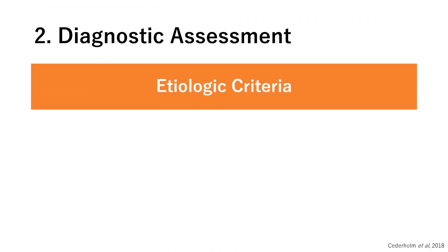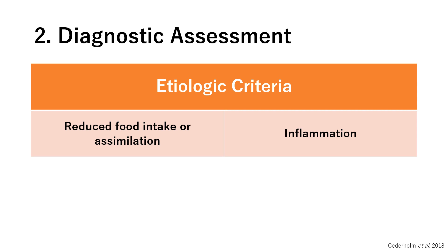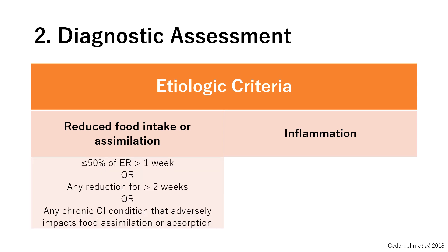The etiologic criteria includes reduced food intake or assimilation and inflammation. If a patient has been eating 50% or less of their estimated requirements for over a week, or has any reduced intake for more than two weeks, they meet the criteria. Chronic gastrointestinal conditions that adversely impact food assimilation — such as short bowel syndrome, pancreatic insufficiency, esophageal strictures, gastroparesis, and intestinal pseudo-obstruction — also meet the criteria. Gastrointestinal symptoms such as nausea, vomiting, diarrhea, dysphagia, constipation, and abdominal pain are also included.